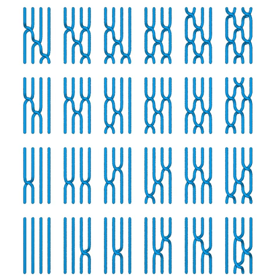Since we must require that the strings never pass through each other, it is necessary that we pass to the subspace Y of the symmetric product, of orbits of n-tuples of distinct points.